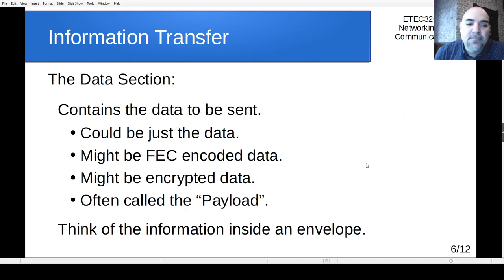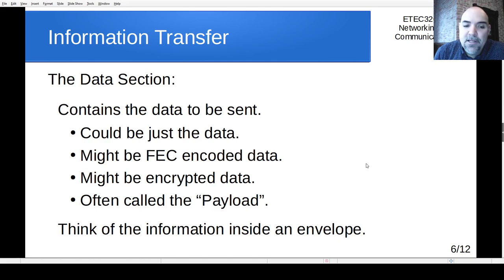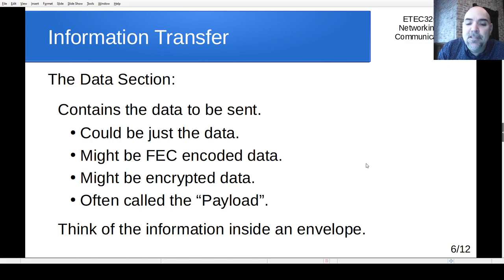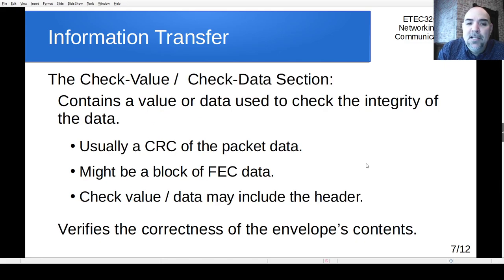The data section of a packet is usually called the payload. It could include forward error correction encoded data interleaved with it, or it might be encrypted. The payload is the thing we are carrying in the packet — the papers or information inside the envelope, not on the outside.